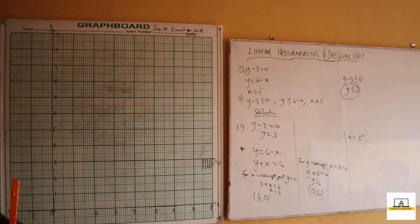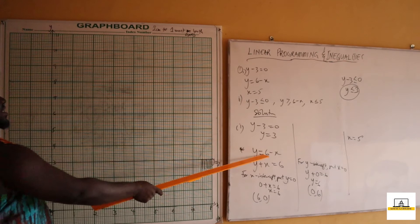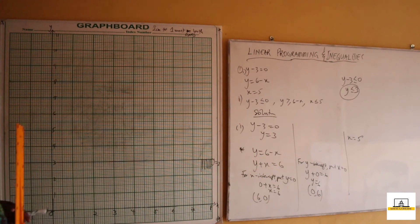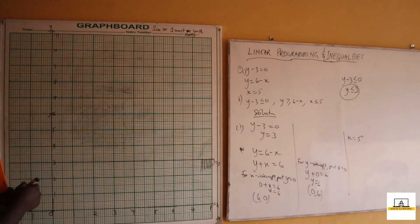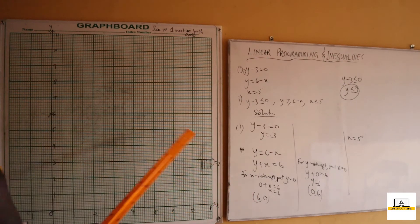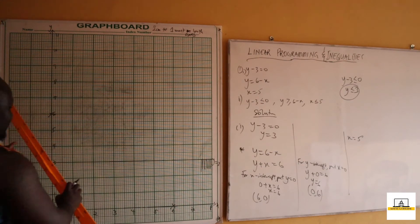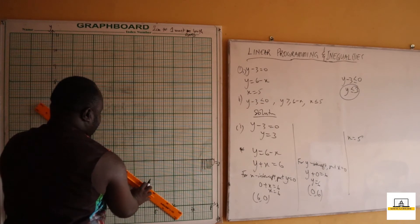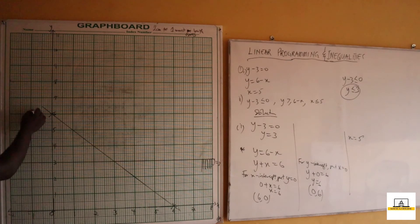Now for the next line: the points are (0, 6) and (6, 0). We mark both points on the axes and draw the straight line through them. This is the line y equals 6 minus x, or equivalently y plus x equals 6.